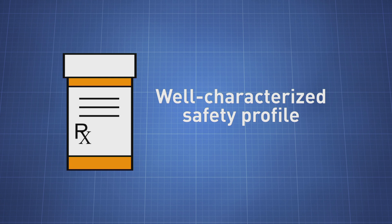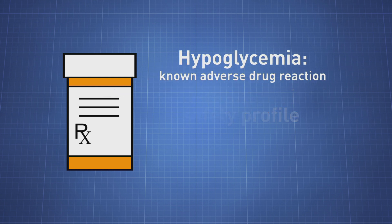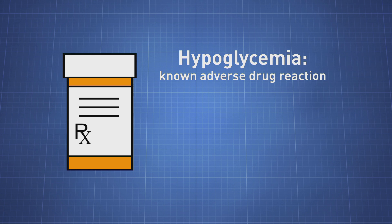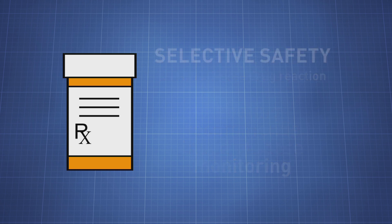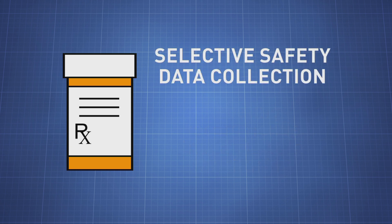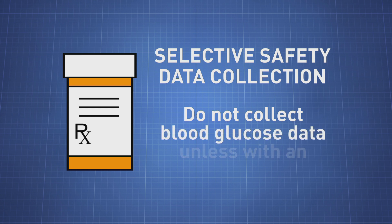For example, consider a drug with a well-characterized safety profile where hypoglycemia is a known adverse reaction and labeling recommends routine blood glucose monitoring. Using selective safety data collection, blood glucose data would not be collected unless associated with an adverse event, because it is no longer needed to understand the drug's safety profile.